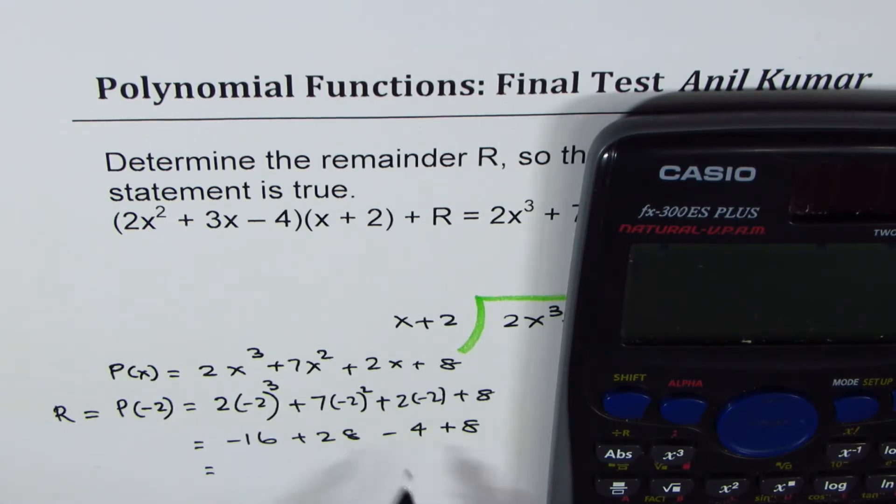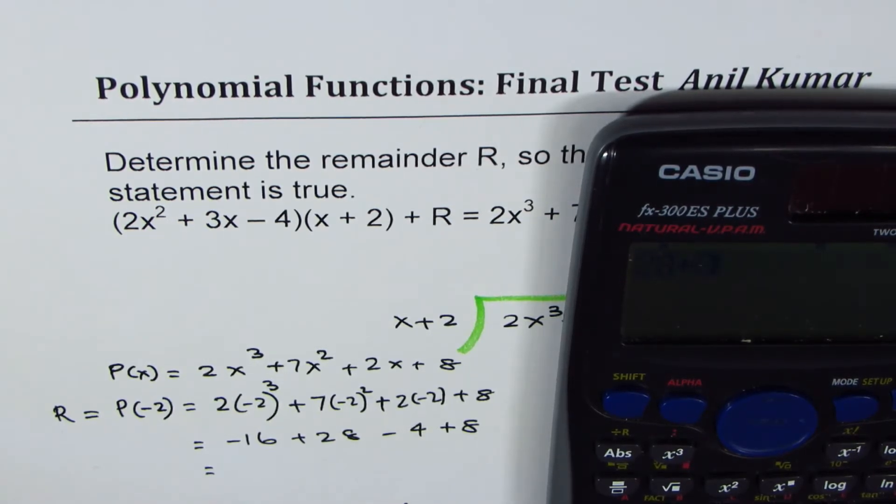So let me add the positive terms first. Plus 28 plus 8, and then I'll take away 16 and 4, which is 20, and that gives me 16 as my answer.